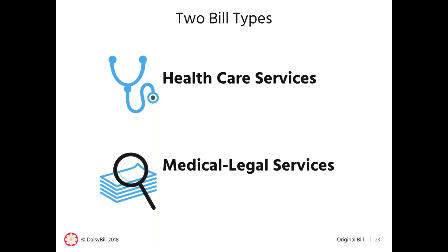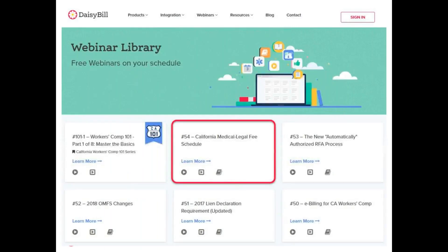In California, there are two types of medical-related services for workers' comp: healthcare services and medical legal services. The labor code, regulations, and rules differ for these two types of services. This 101 series deals with bills for healthcare services — we will not cover medical legal services. For in-depth information on medical legal billing, go to our webinar library and check out this year's earlier webinar featuring med legal expert Sue Honor.